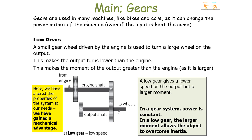Gears are used in many machines, like bikes and cars, to change the power output of the machine even if the input is kept the same. With a low gear — for example, in a low gear of a car or a bike — a small gear wheel is driven by the engine to turn a large wheel on the output. This makes the output turn slower than the engine, making the moment greater because the wheel is now larger. This allows a larger moment and allows the object to overcome inertia, gaining a mechanical advantage, and that's what lower gears are used for — to start the acceleration process of motion.